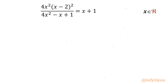Welcome back to Infigyan friends. Today in this video, we are going to take up one very interesting and challenging rational equation for real values of x. The equation is 4x² times (x minus 2)² over (4x² minus x plus 1) equal to x plus 1, where x belongs to the real numbers.